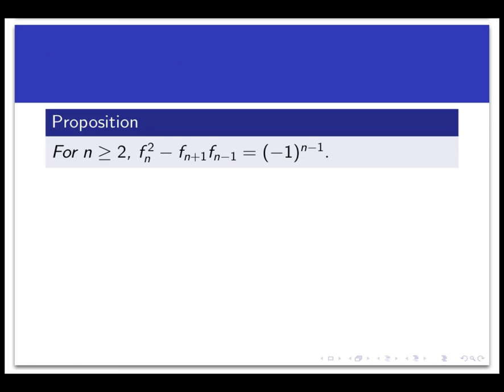So let's prove this proposition here in this video. This is called Cassini's identity after a famous mathematician. It says that for all n bigger than or equal to 2, that Fn squared minus Fn+1 times Fn-1 is equal to negative 1 to the n-1 power. This object here on the right is just going to be either plus 1 or minus 1 depending what n is.